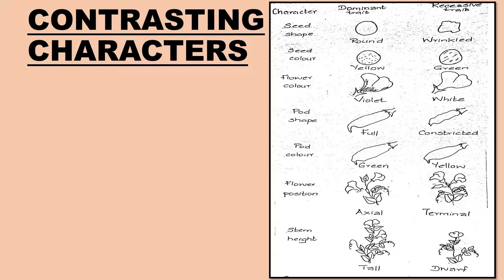The pea plant has various contrasting characters among its different varieties. Seeds may be round or wrinkled. Seed color may be yellow or green. Color of flower may be violet or white. Ripe pods may be inflated or constricted. Unripe pods may be green or yellow. Flowers may be axial or terminal in position. And the stem may be tall or dwarf.